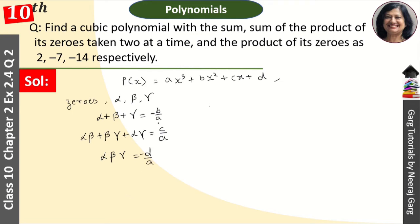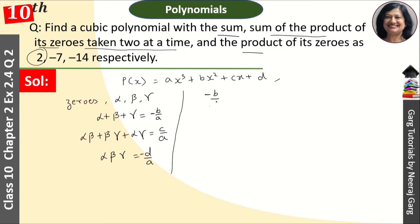Now, what is given in the question? First of all, it is given that the sum — alpha plus beta plus gamma — kya diya hua hai? 2 given hai. Toh, humaare paas minus b upon a is equal to 2. Sum of the products of its zeros taken 2 at a time yeh diya hua hai humein minus 7. Toh c upon a is equal to minus 7.